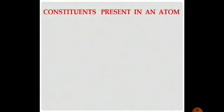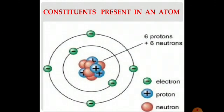Let's recall. Which constituents are present in an atom? Here are the constituents of a carbon atom: protons, neutrons, and electrons are present in an atom. An atom has the same number of positively charged protons and negatively charged electrons. So an object doesn't show any charge, though its atoms contain charged particles.